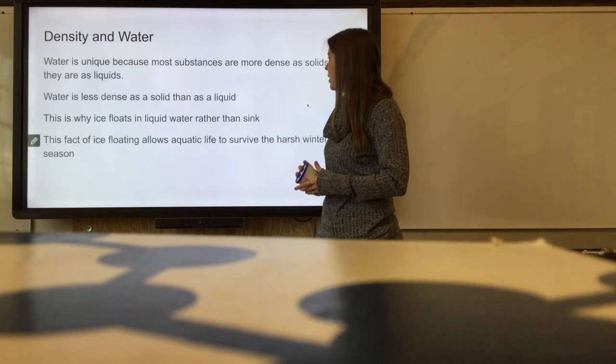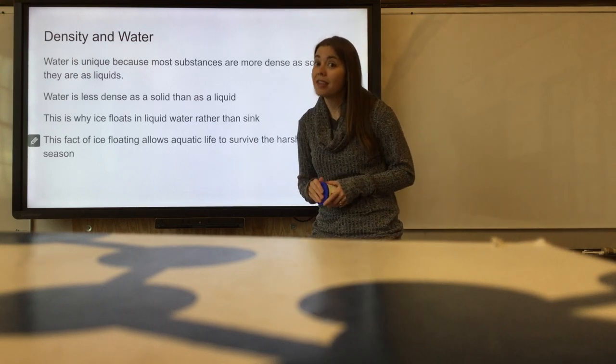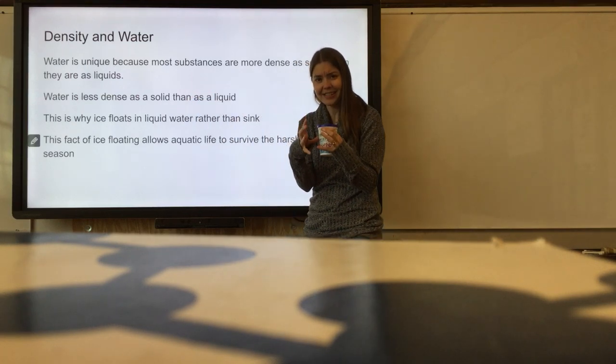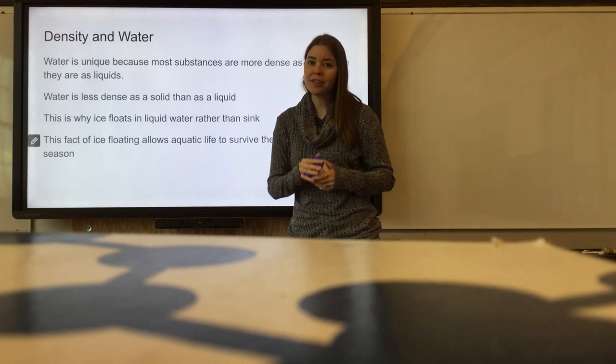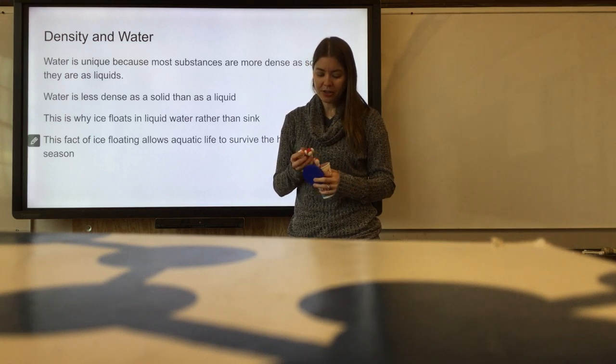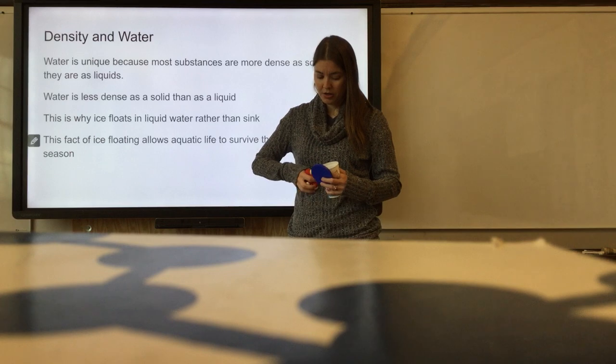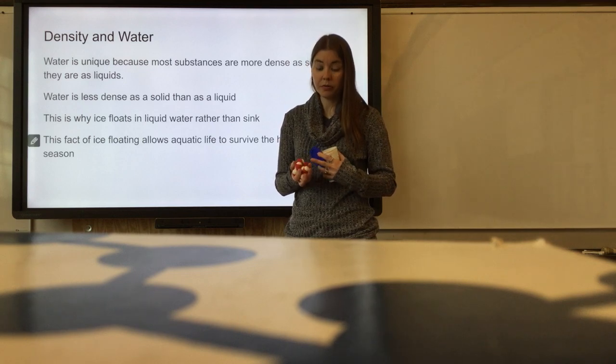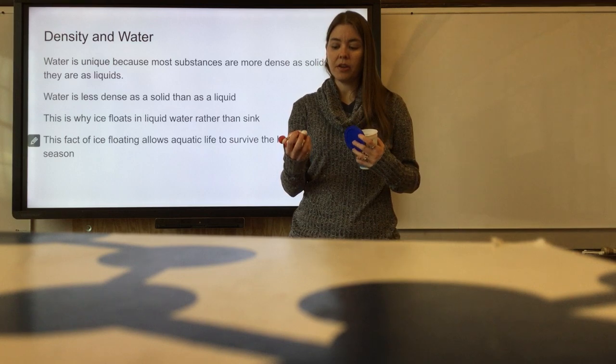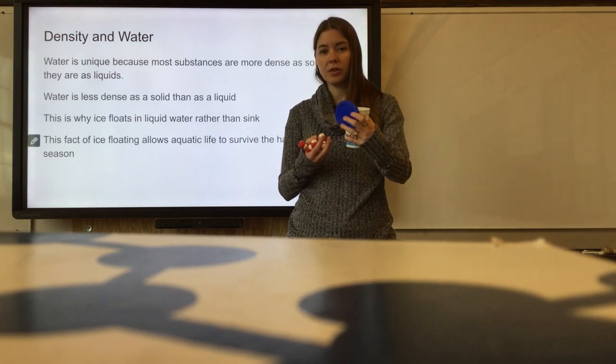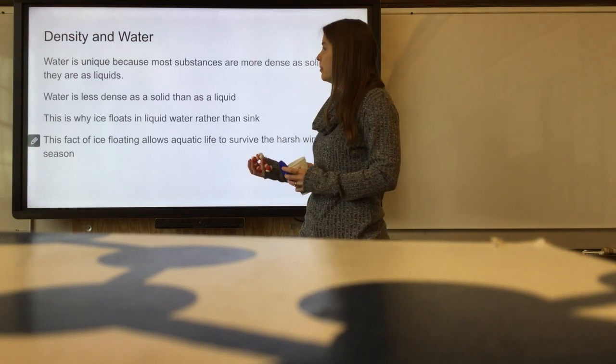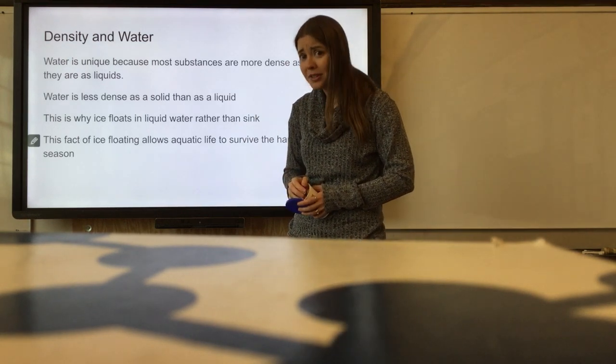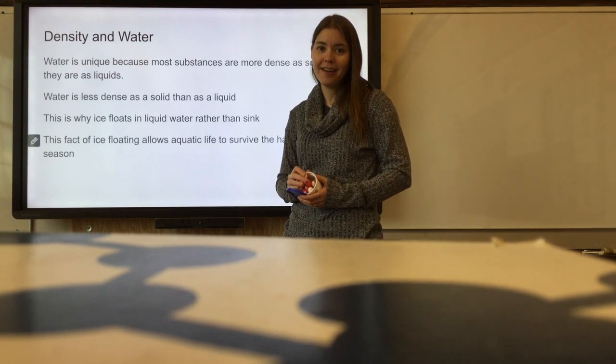Water is very unique because most substances are more dense as solids than as liquids. Most things, if you go from liquid to solid, as those molecules come closer together and get condensed down, it gets more dense. Water is very different, and a lot of it has to do with the structure of water itself. When water freezes and becomes solid, all those little molecules come together and it actually creates air pockets, so it does spread out a little bit. Water becomes less dense as a solid than a liquid, so ice will float. If ice didn't float, it would kill all the critters in our lakes and ponds.